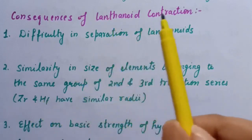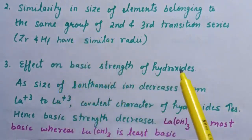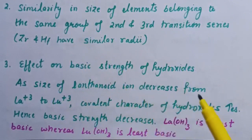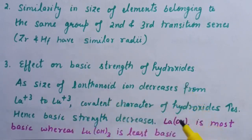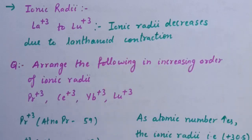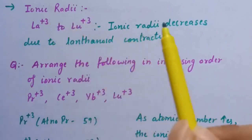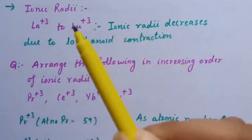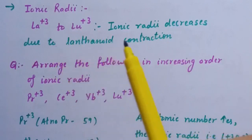Zirconium and hafnium, because of lanthanoid contraction, have similar radii. Third consequence is the effect on basic strength of hydroxides. As the size of the lanthanoid ion decreases from lanthanum +3 to lutetium +3, the covalent character of the hydroxide increases. Hence, lanthanum hydroxide is most basic, whereas lutetium hydroxide is least basic. In the +3 oxidation state, ionic radii decreases due to lanthanoid contraction when we move from lanthanum +3 to lutetium +3.